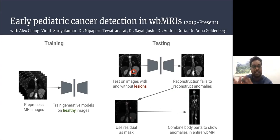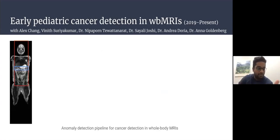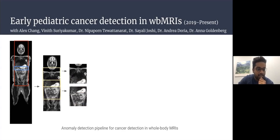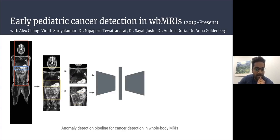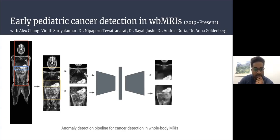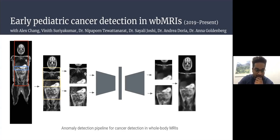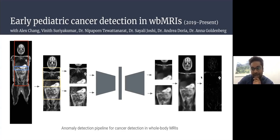Using the residual as a mask and combining all the body parts, we get an idea of where anomalies could be. For example, given a slice with an anomaly, we split it into pieces and pass them into the healthy generative model, which leaves out the anomalous part. When we stitch it back together and subtract, we get a mask of where the anomaly should be.